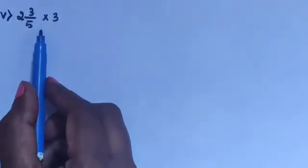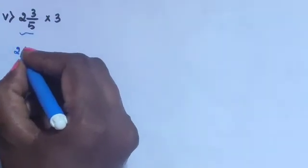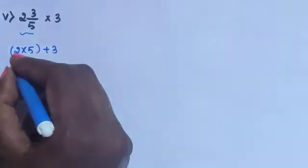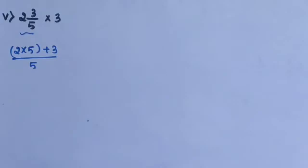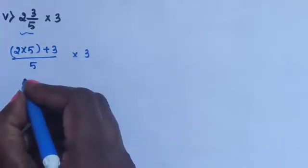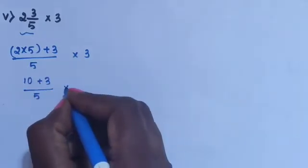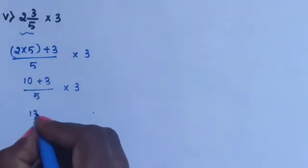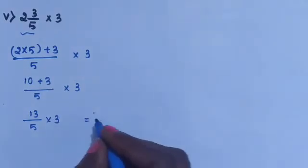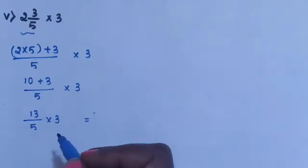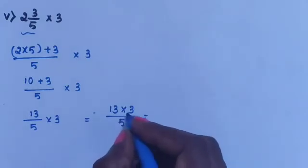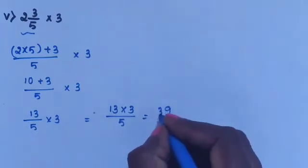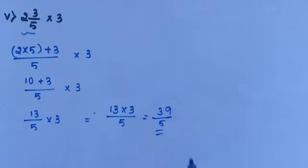Next sub-question 5: 2³/5 into 3. 2³/5 is a mixed fraction, convert into improper fraction. 2 into 5 plus 3 divided by 5. 2 is the whole number, 5 is the denominator, plus numerator 3 divided by denominator, into 3. 2 × 5 = 10, plus 3 = 13 divided by 5, into 3. So 13/5 into 3. 10 plus 3 divided by 5 is the answer, which is 39/5.